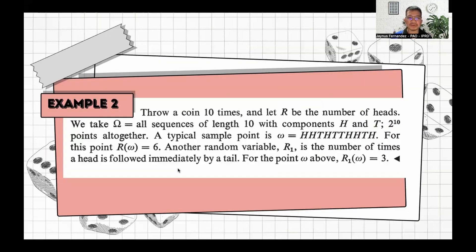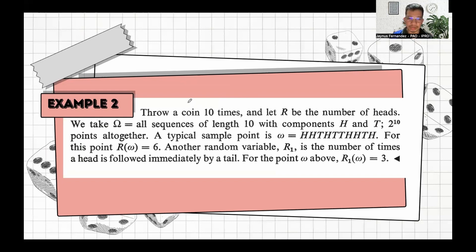Now let's have example number two. Throw a coin 10 times and let R be the number of heads. We take the sample space as all sequences of length 10 with components head and tail, which gives 2 raised to 10 possibilities. A typical sample point omega = head, head, tail, head, tail, head, head, tail, head — for this point, R equals 6, since there are 6 heads. Note that other sample points can be obtained, so the values of random variable R can change.